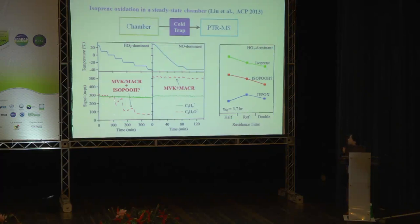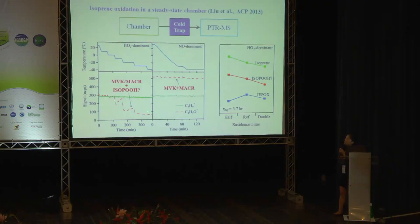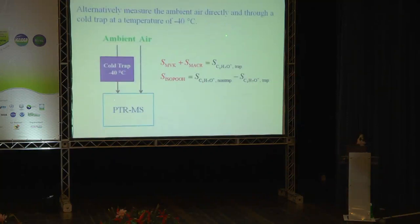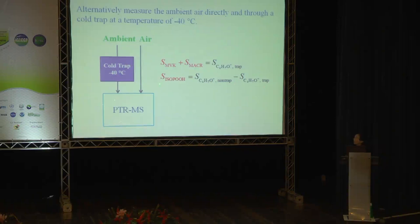Here is one piece of evidence: when we increased the residence time of our chamber, the signal for condensing species decreased with increased residence time, consistent with it being a first-generation product. We also found that at around minus 40°C, we don't see further condensation if we keep decreasing temperature, meaning these compounds can be fully removed at minus 40°C. So we wondered if this might be a good way to quantify, or at least measure, isoprene hydroperoxides in the field. In this campaign, we alternately measure ambient air directly and through a cold trap at minus 40°C. The MVK+MACR signal through the cold trap gives C4H7O+, and the signal difference between the non-trap and cold trap measurement gives the isoprene hydroperoxides.